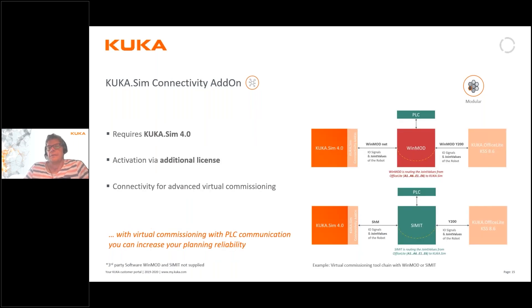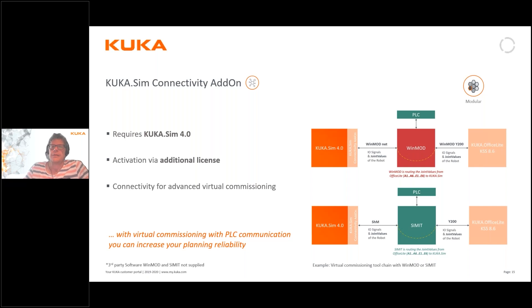Another new feature is a complete connectivity add-on which allows connectivity to both PLC brands, so we can include PLC code in our KUKA.Sim. This is very important for virtual commissioning because usually the robot interacts with PLCs in signal exchange, and the PLC controls some of the automation equipment in our zone. In the connectivity add-on there is direct connection to some of the more commonly used simulation tools on the market — SIMIT and WinMOD — and we will also have the OPC UA interface available for those not using WinMOD or SIMIT.